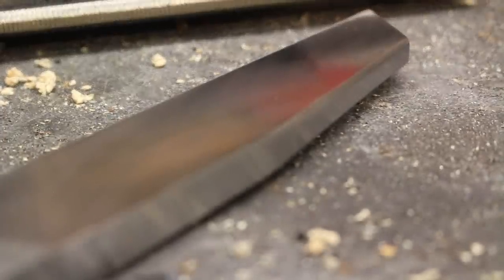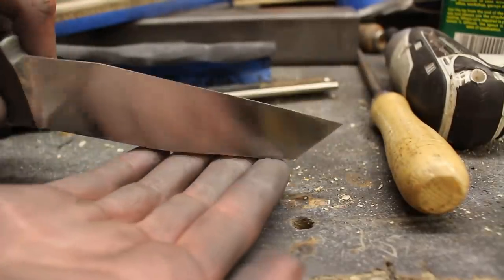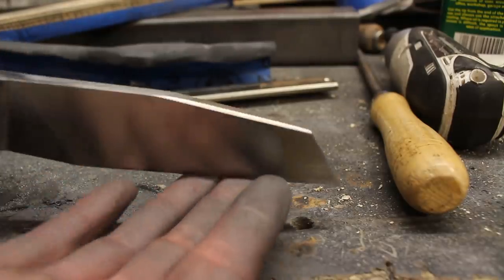This is the knife at 600 grit and ready for the heat treat. I've got my fingers crossed that it all works properly this time using the new oven.